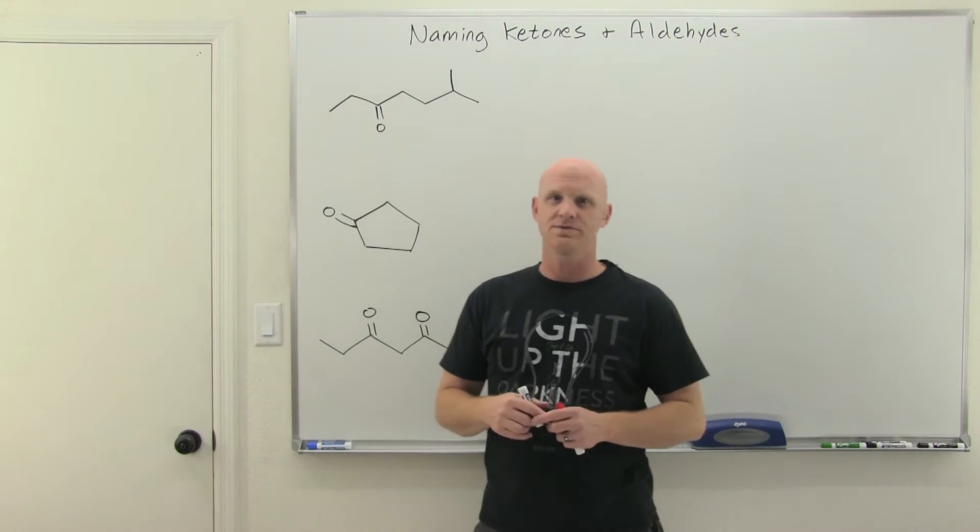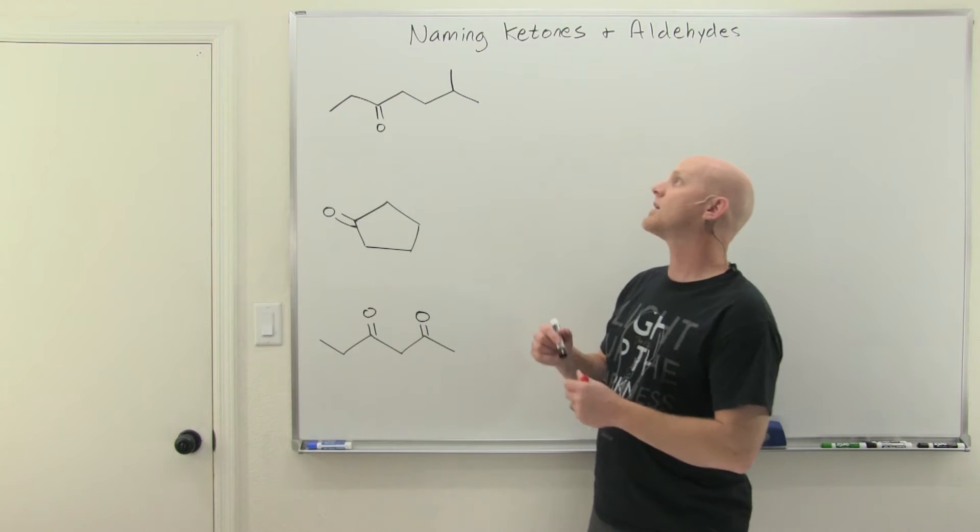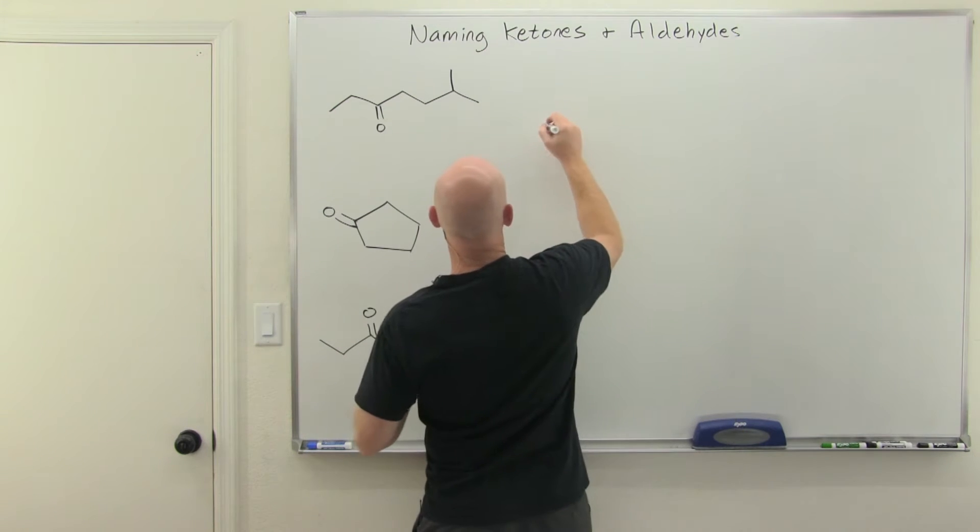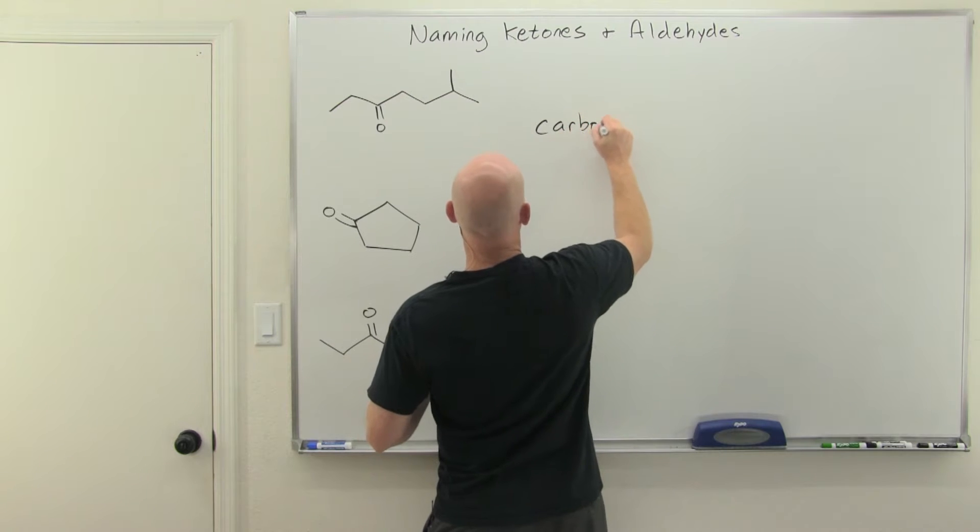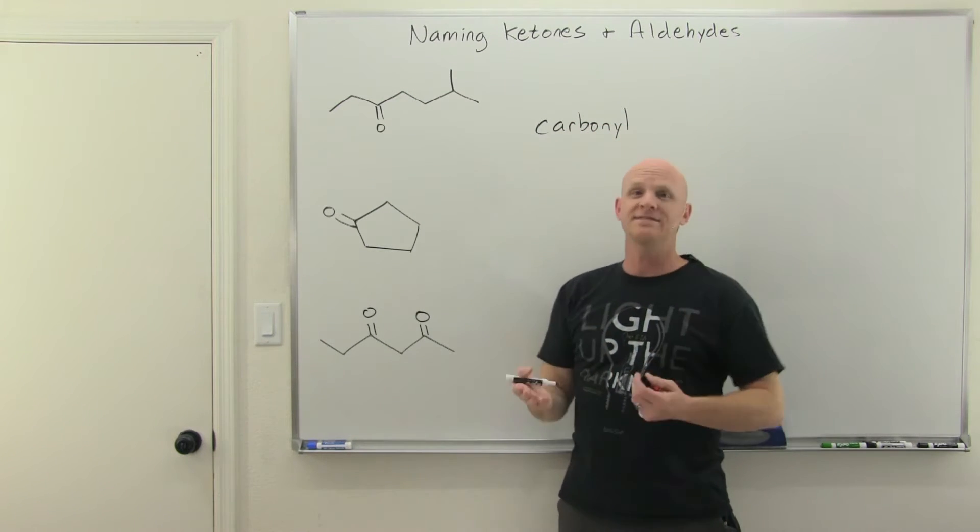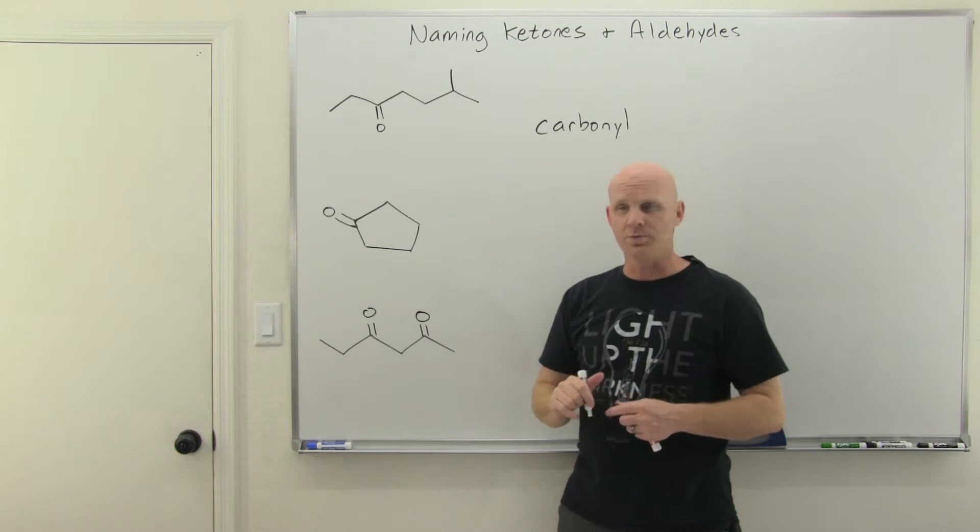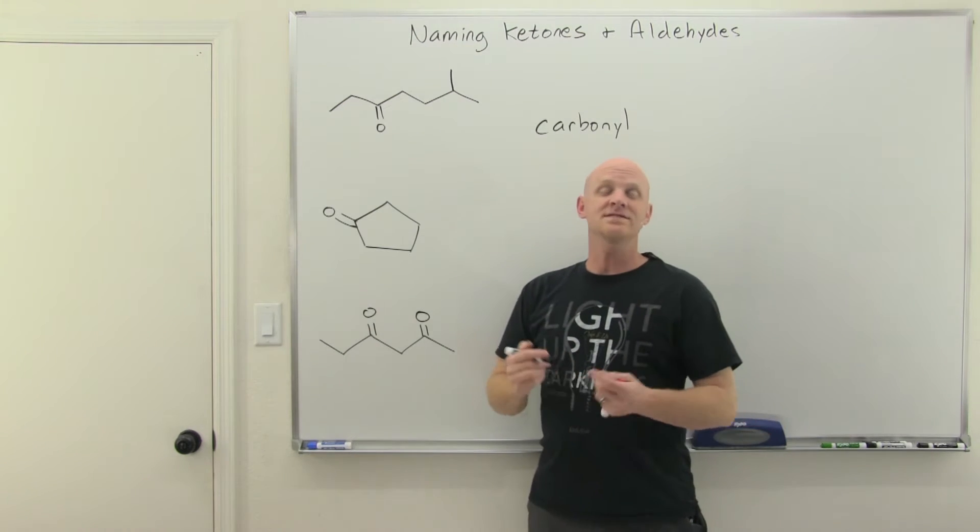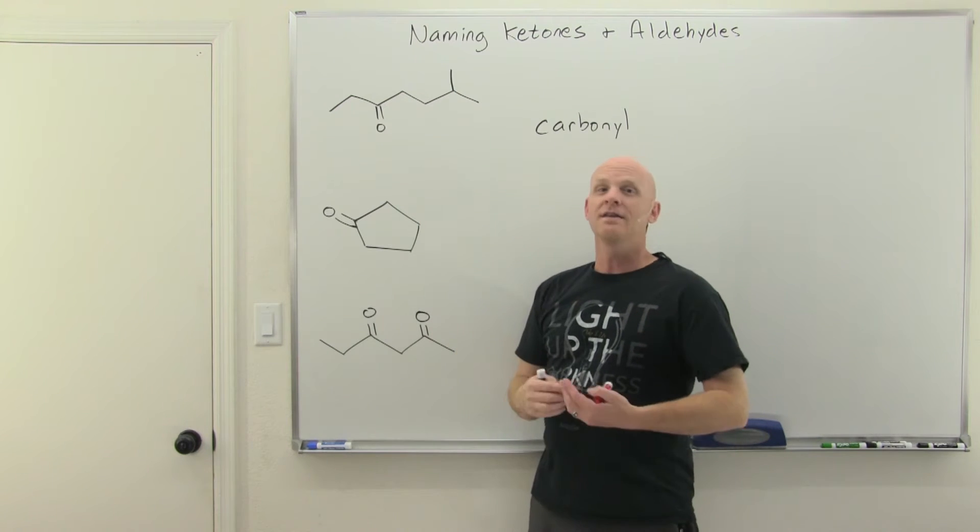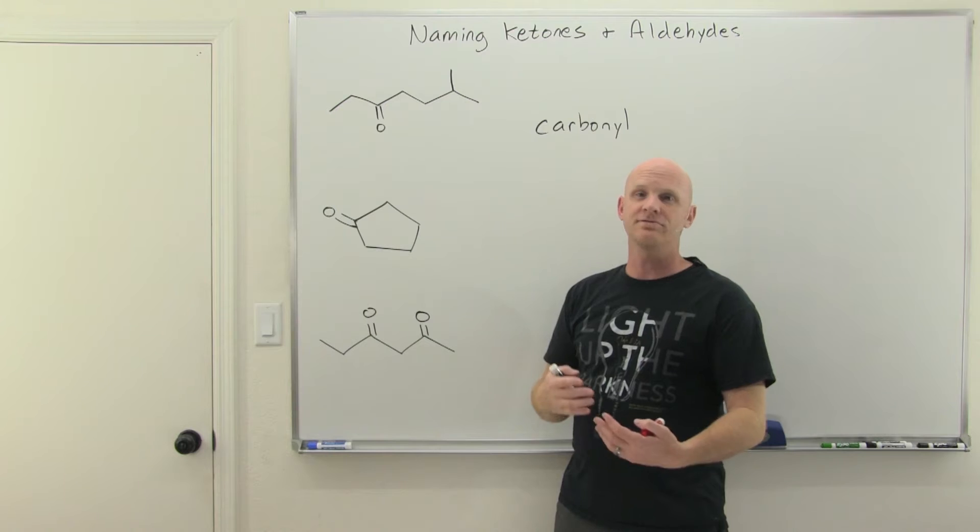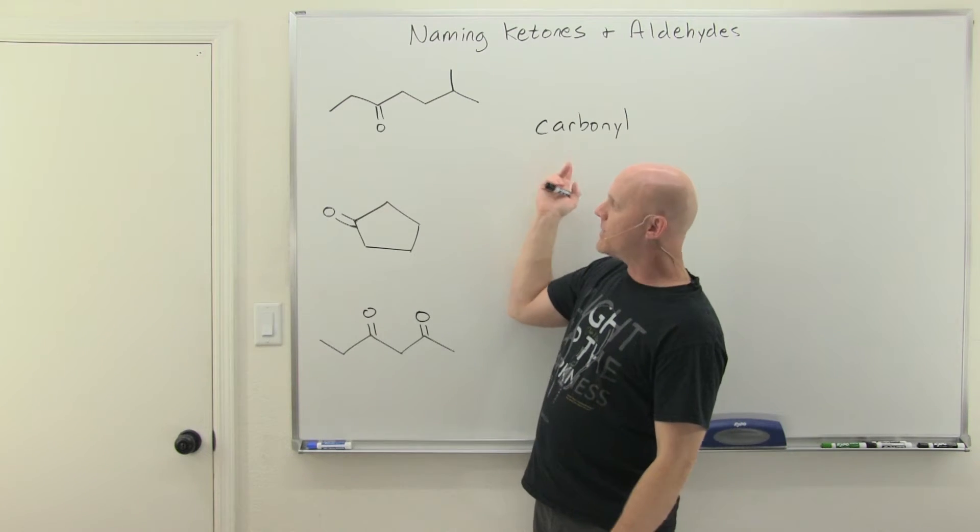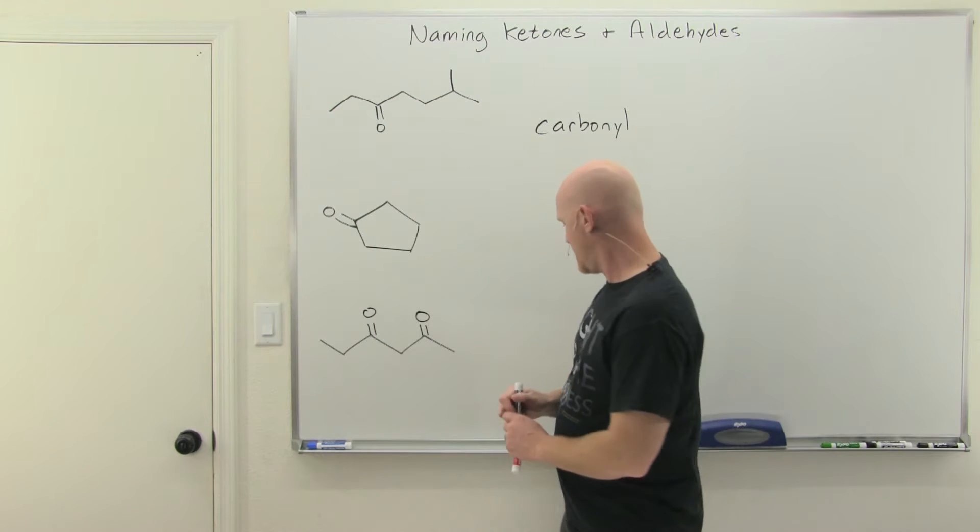Before we dive into naming ketones, we first want to quickly talk about this carbon-oxygen double bond that's often referred to as a carbonyl group or carbonyl group, depending on who you talk to. Both ketones and aldehydes have this carbonyl group, and you should know that that's not the name of a functional group. It is a moiety that's part of both the ketone and aldehyde functional group. So the carbonyl itself is not the functional group, but it is a component of both ketones and aldehydes.